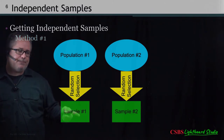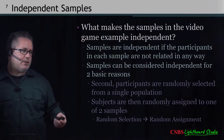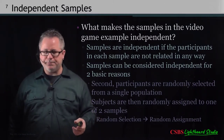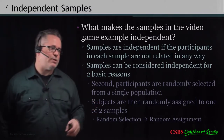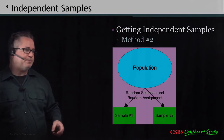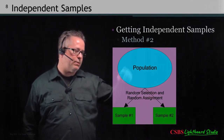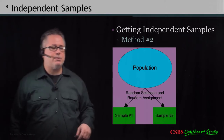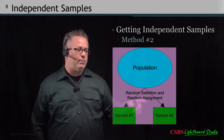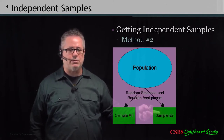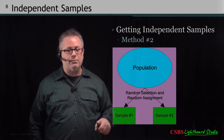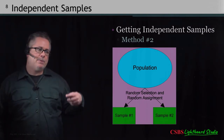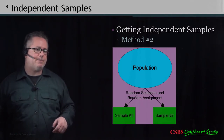That's not the case for our study. Here, samples can be independent when participants are randomly selected from a single population and then randomly assigned to conditions. In our example, we randomly selected CSUN students, then through a random process assigned them to either the Grand Theft Auto group or the Lego group. Random selection combined with random assignment makes those two samples independent.